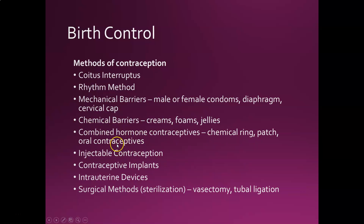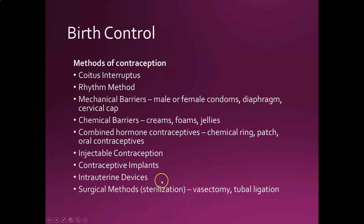Then there are all the hormonal contraceptives — oral pills, a vaginal ring, a patch, injectable contraception, and contraceptive implants all have a hormonal component. Intrauterine devices come in hormonal forms and non-hormonal forms like the copper IUD. Lastly, surgical methods are the permanent ones: vasectomy and tubal ligation.